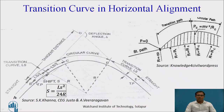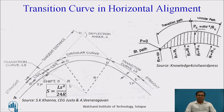To fit this transition curve, we can see here that we have shifted the original circular curve by some distance. This shift is required to accommodate the transition curves on the circular curve. How to calculate the shift? It is given by S = Ls²/24R, where R is the radius of the curve and Ls is the length of the transition curve.